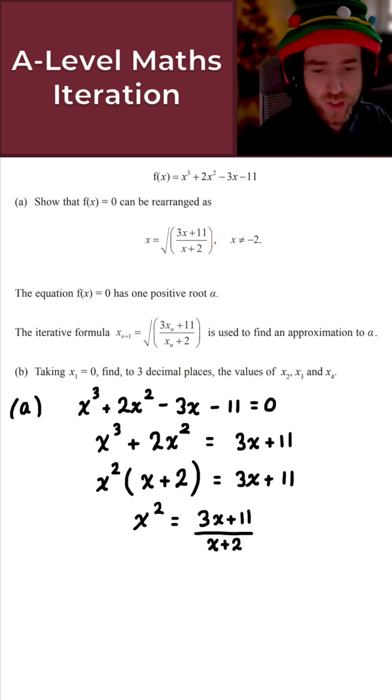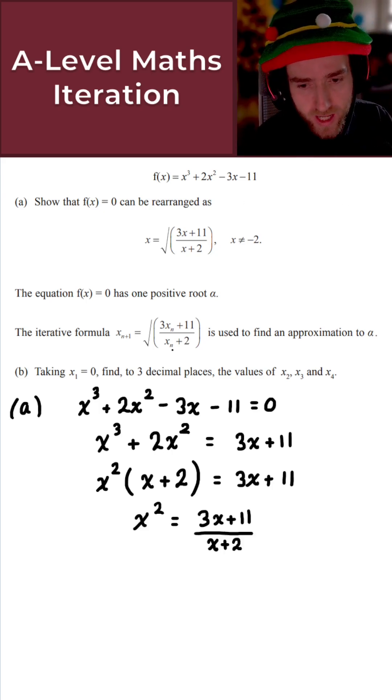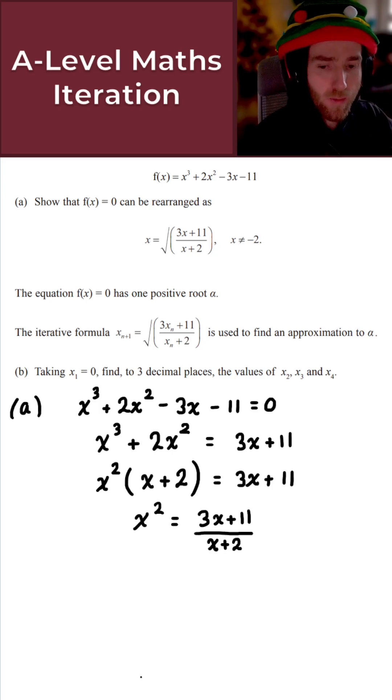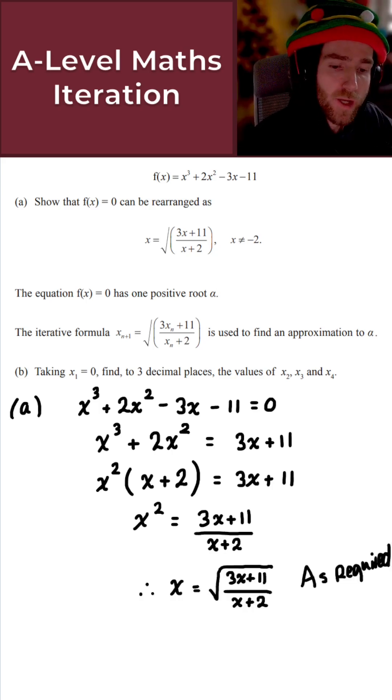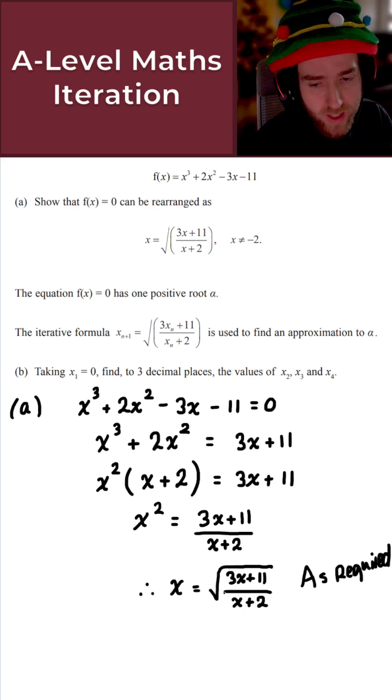And at this point, we're pretty much done. What we now want is just x here. We have x squared. So just take the square root of both sides. And if we do that, what we obtain is the desired result as required. So x equals the square root of 3x plus 11 all over x plus 2. Perfect. So that gives the solution to part A.